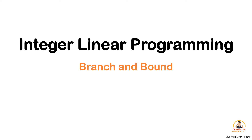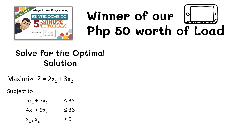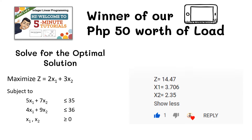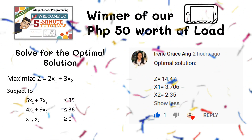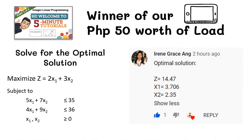If you haven't watched the first video, click the video on top. The winner of our 50 pesos worth of load from the first video is our subscriber Irene Grace Anne. Congratulations! The optimal solution of the problem is x1 equals 3.706 and x2 equals 2.35, which will have a z value of 14.47. Thank you for participating.